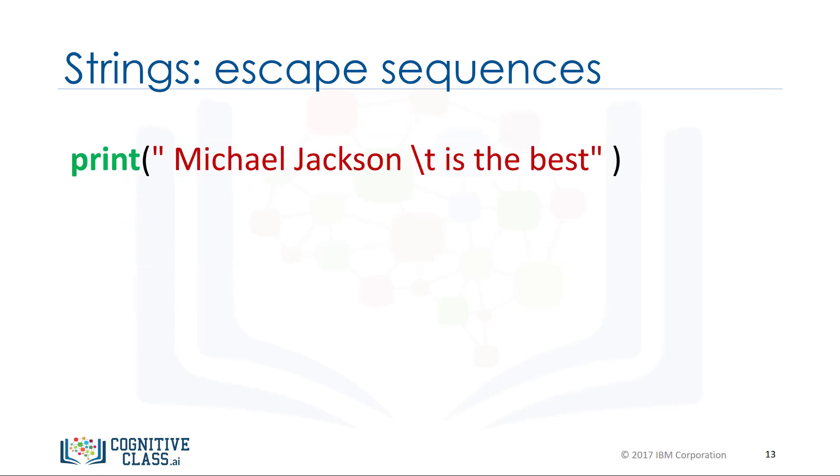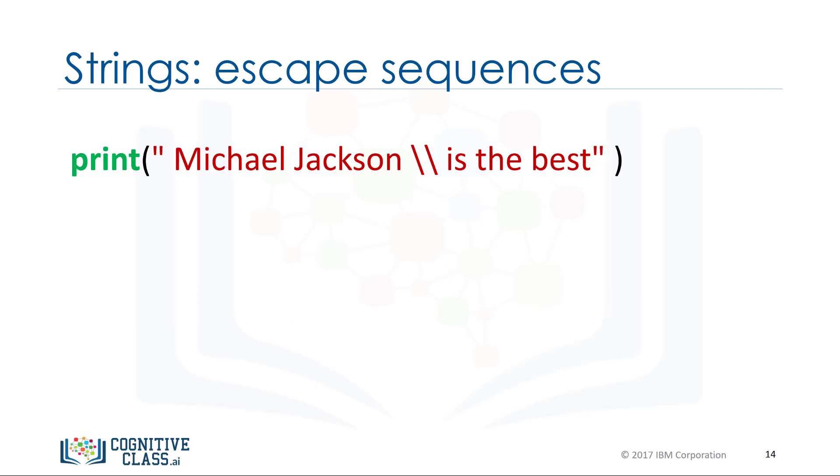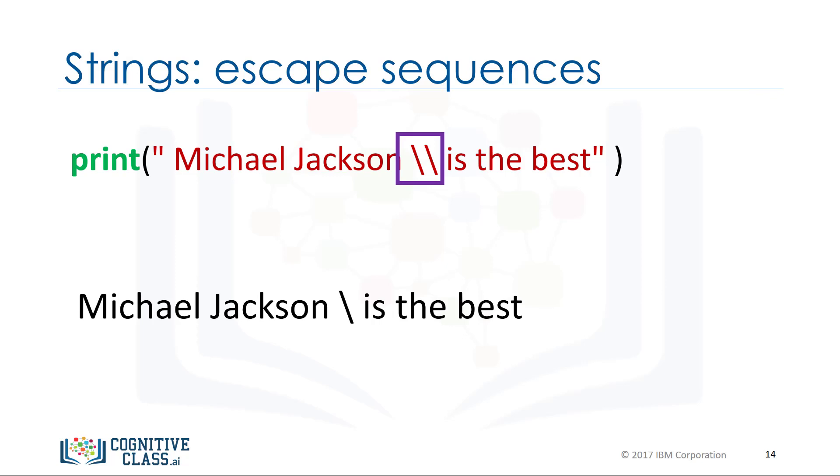Similarly, backslash t represents a tab. The output is given by a tab where the backslash t is. If you want to place a backslash in your string, use a double backslash. The result is a backslash after the escape sequence. We can also place an r in front of the string.